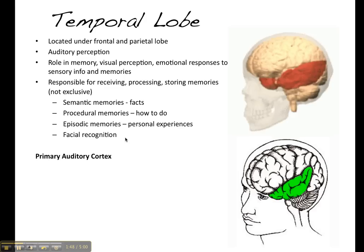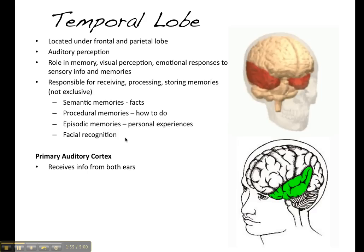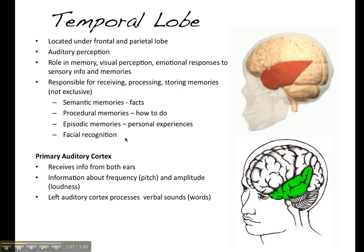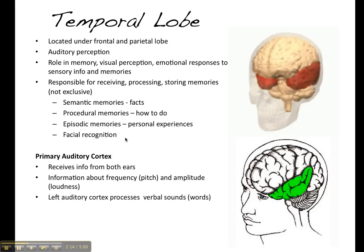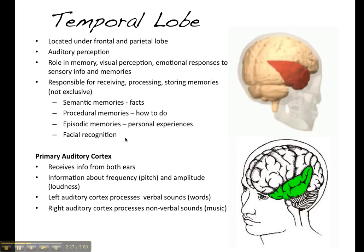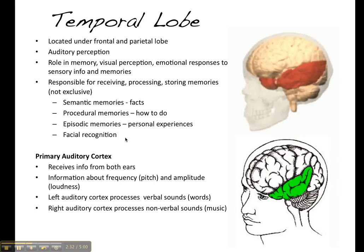The primary auditory cortex is located in the temporal lobe. It receives information from both ears and processes it in terms of pitch and amplitude. The left auditory cortex tends to process verbal sounds such as words — which is another reason why the left hemisphere is responsible for language. Interestingly, the right auditory cortex tends to process nonverbal sounds like music.